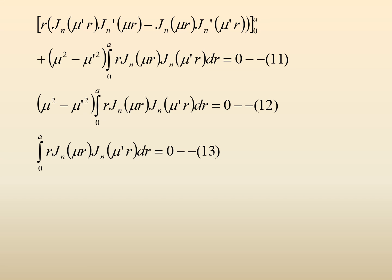When the limits are substituted, the boundary term becomes 0. So we obtain (μ² − μ'²) times the integral from 0 to a of r · Jn(μr) · Jn(μ'r) dr = 0. Since μ ≠ μ', we have μ² − μ'² ≠ 0, so the only possibility is that the integral from 0 to a of r · Jn(μr) · Jn(μ'r) dr = 0.